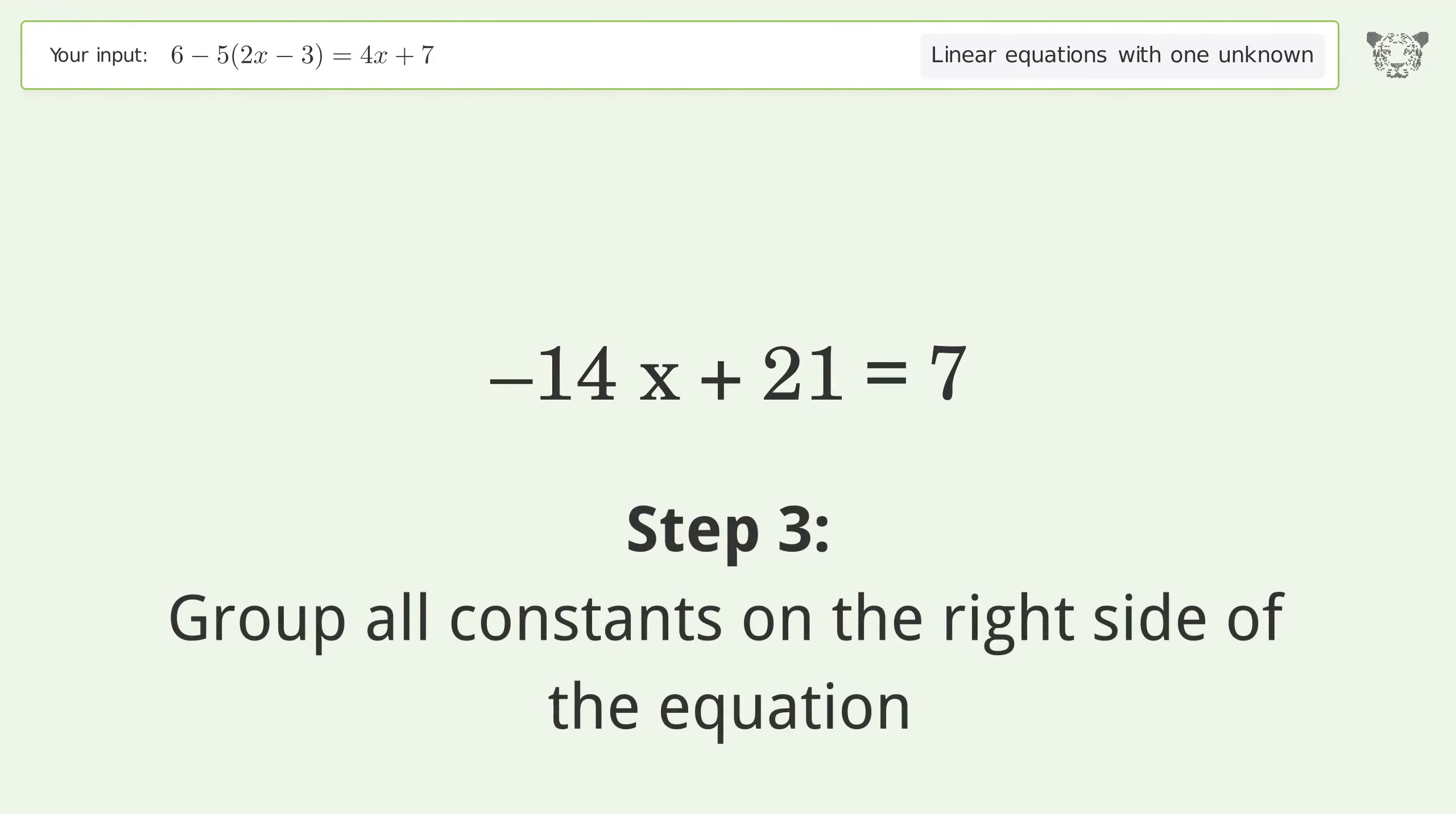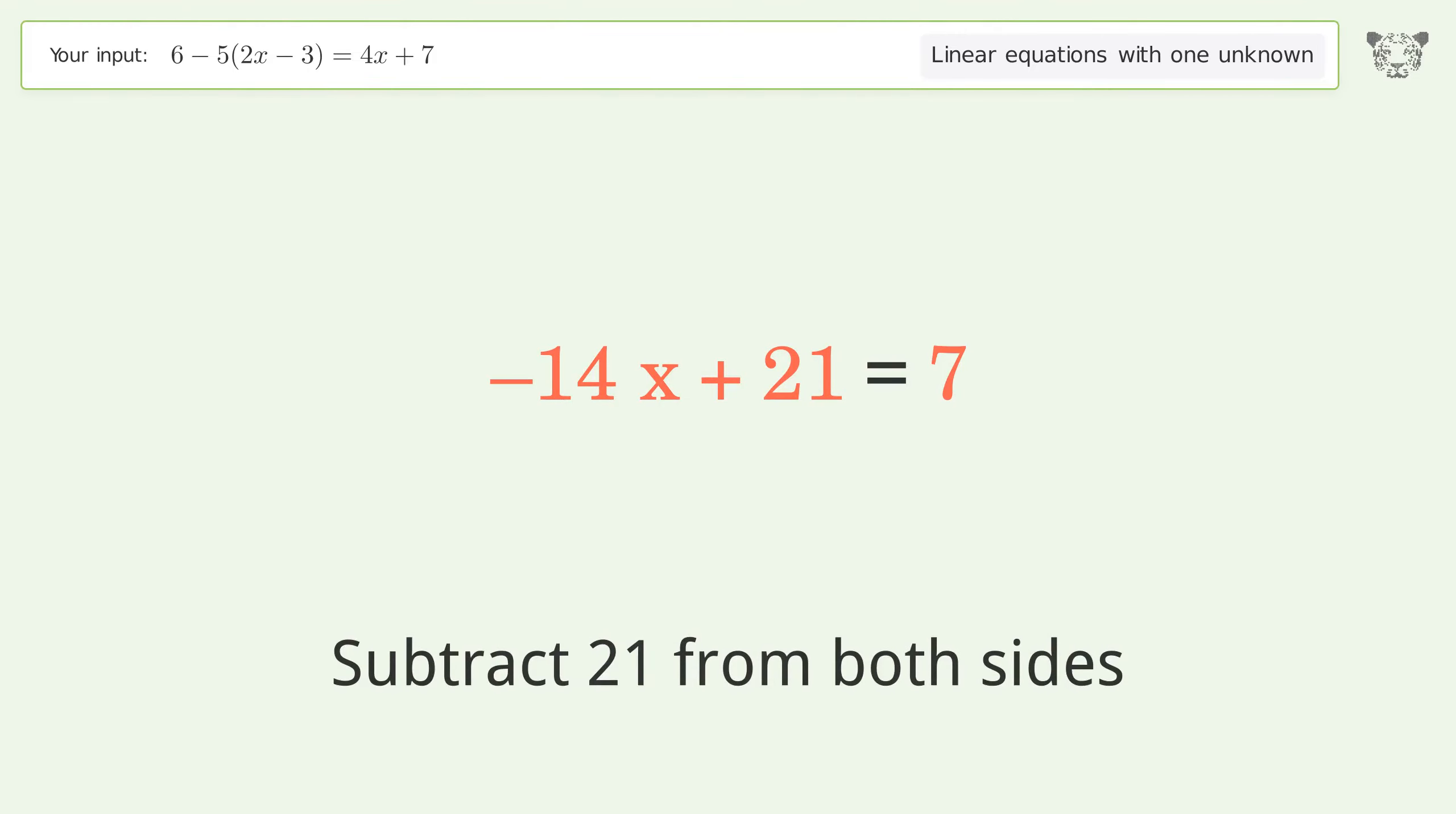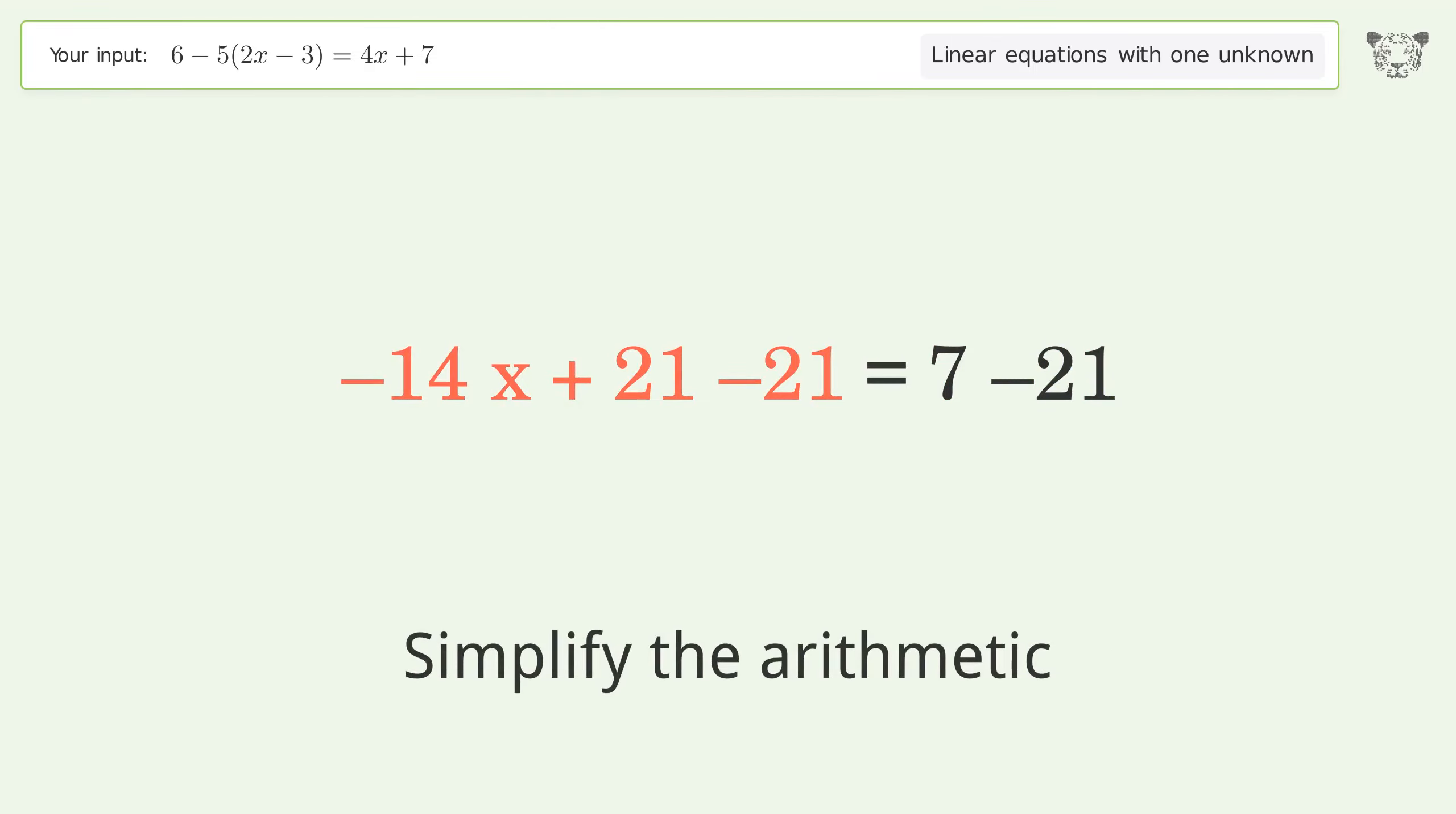Group all constants on the right side of the equation. Subtract 21 from both sides. Simplify the arithmetic.